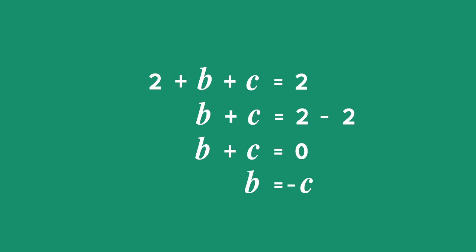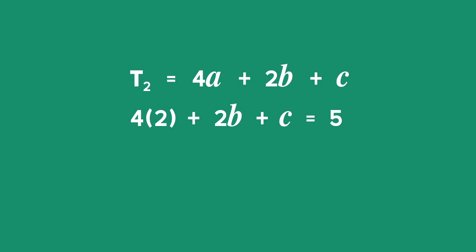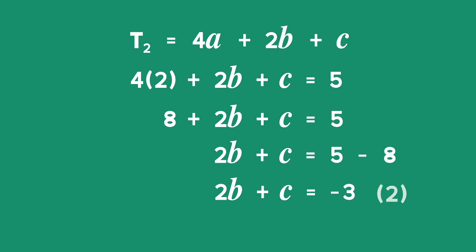Moving on to term 2, which has the value 4a + 2b + c, and term 2 equals 5. Substituting a = 2: 4(2) + 2b + c = 5, so 8 + 2b + c = 5. Therefore 2b + c = 5 − 8 = −3. We call this equation 2.